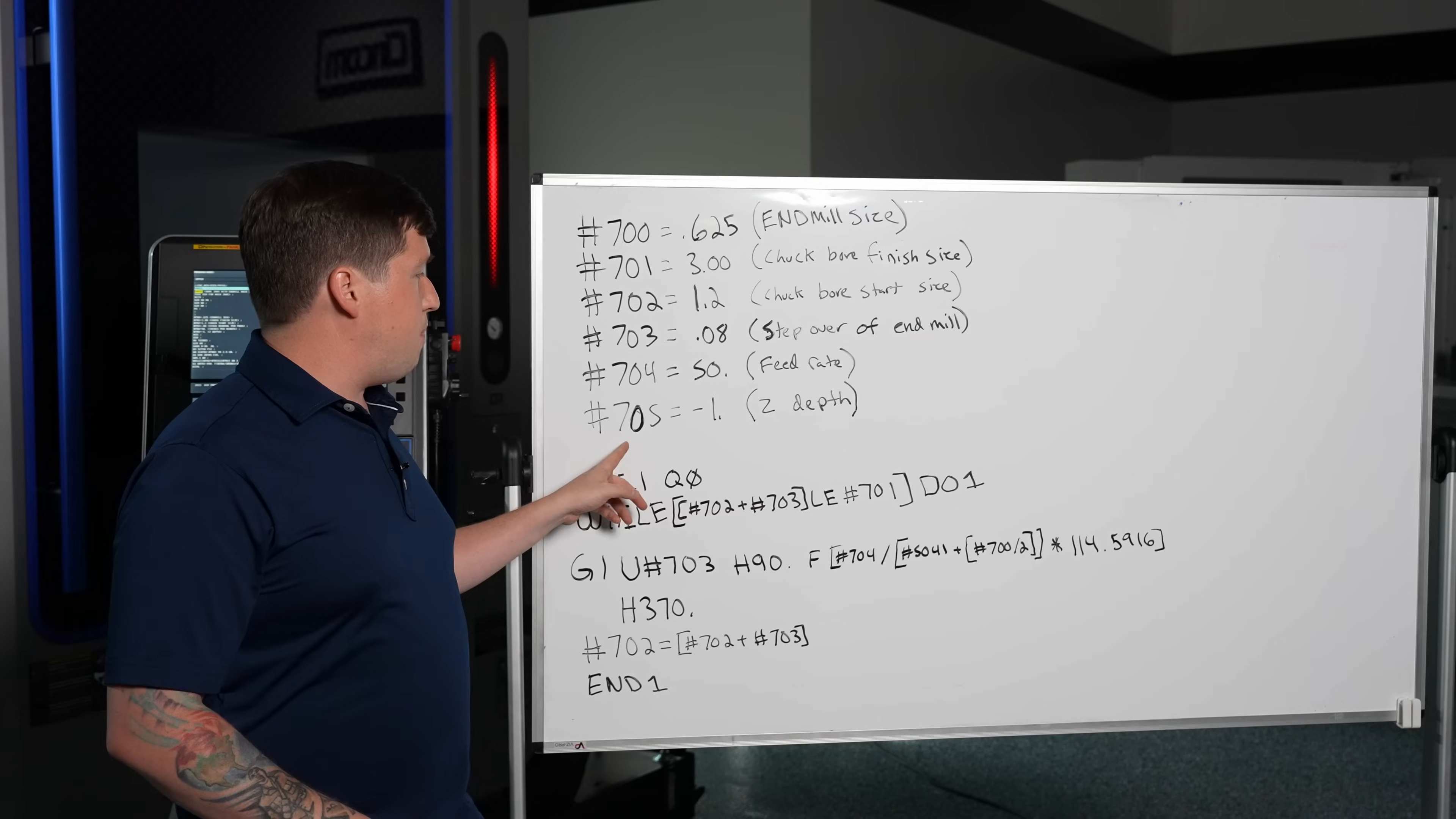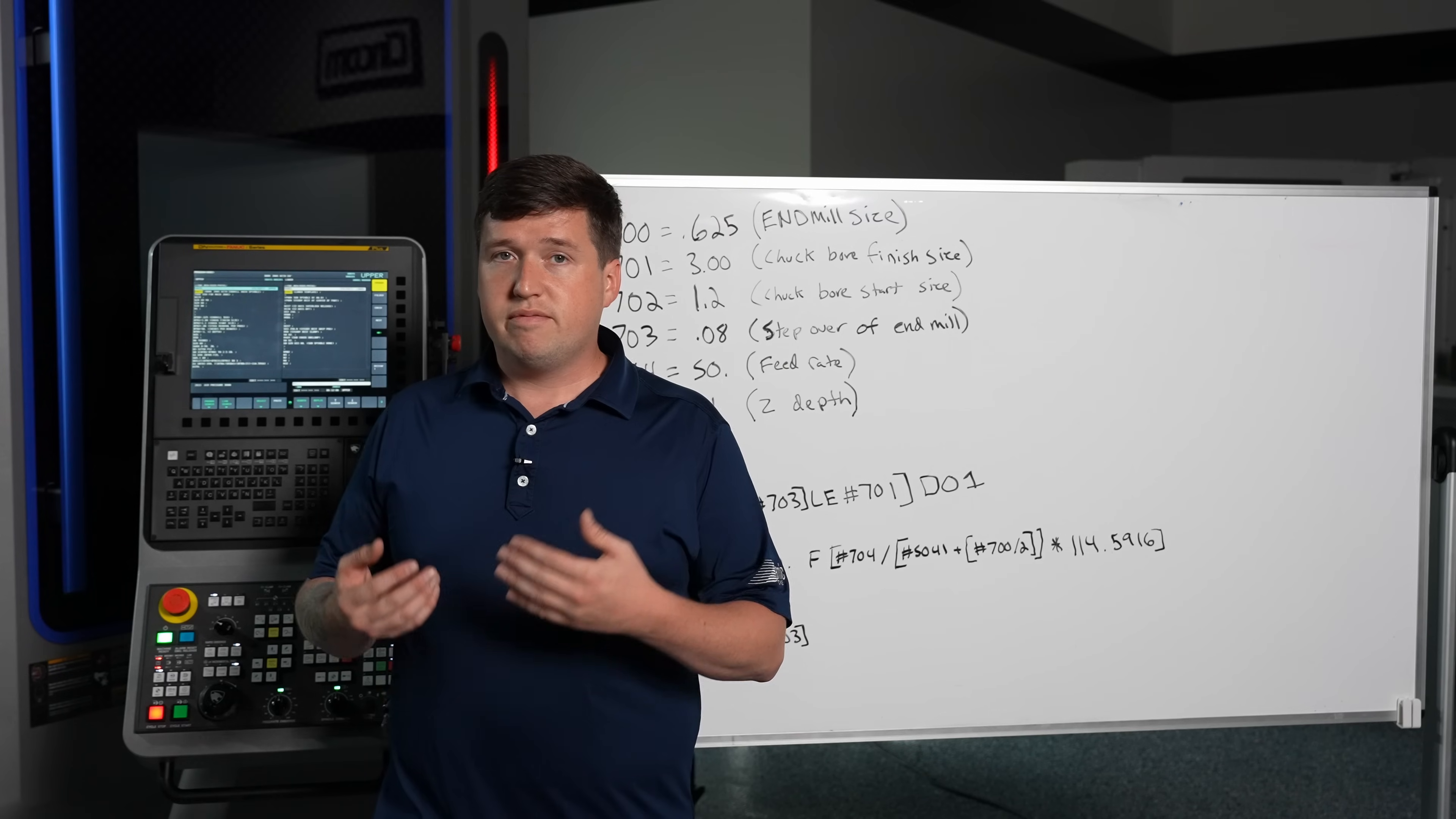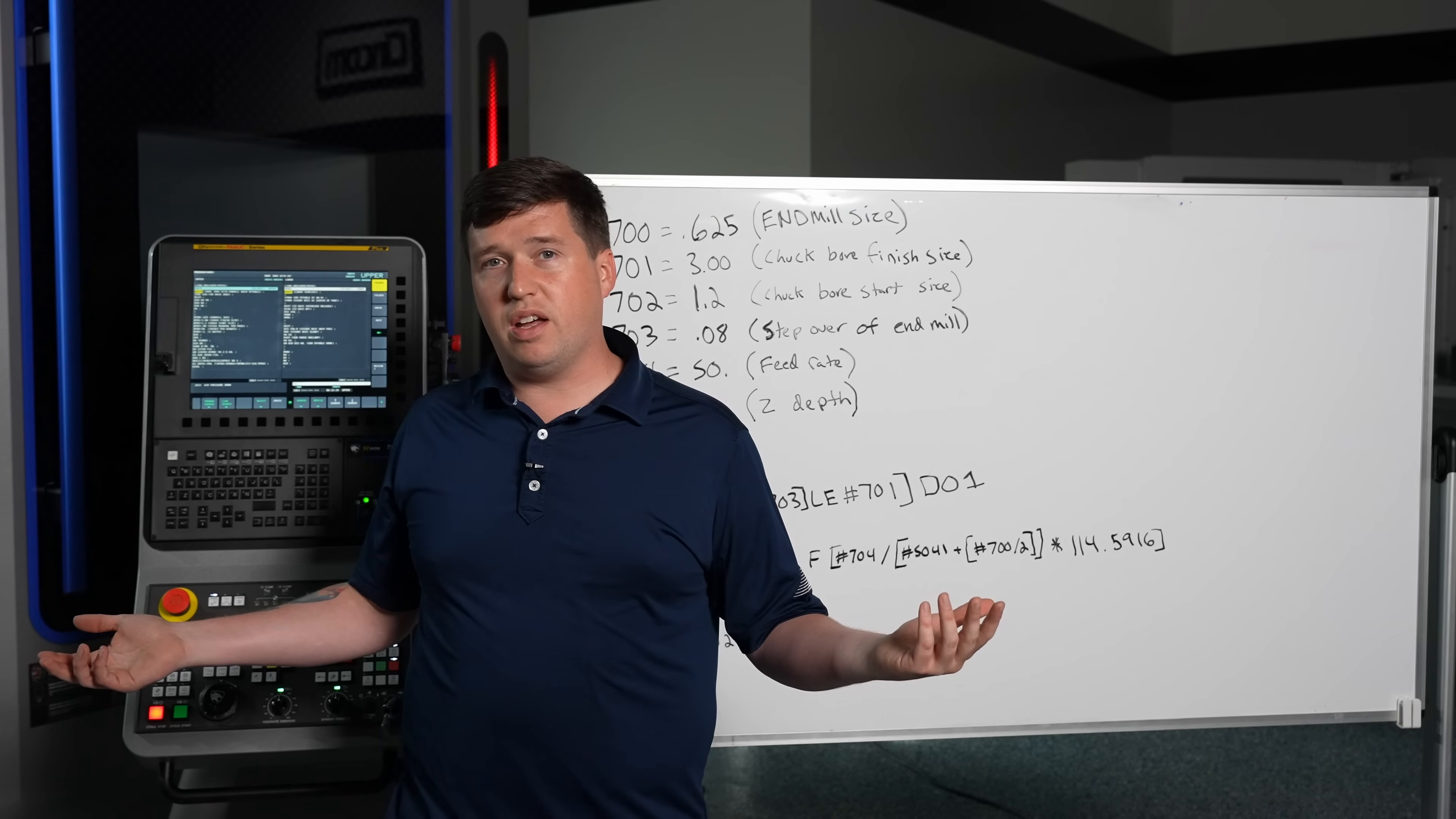The next thing is going to be pound 705. This is going to be your z depth. Now on the main spindle I'll have a negative number because I move negatively towards my main spindle. On my sub spindle program 692 I'll have a positive number. And yeah if you don't know that kind of stuff please do not take this macro and put it into a CNC machine. So with all that you can now bore out your jaws with an end mill.